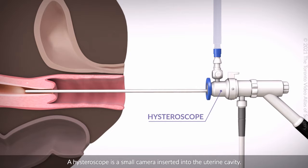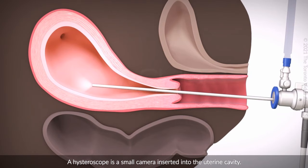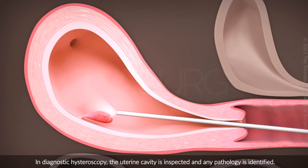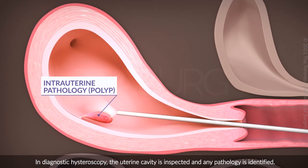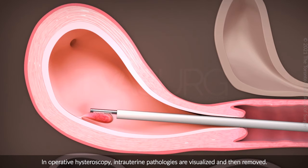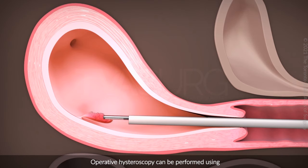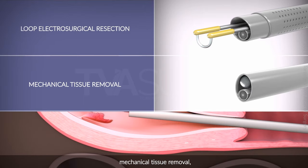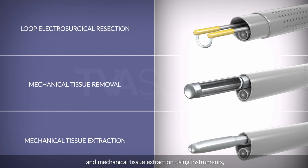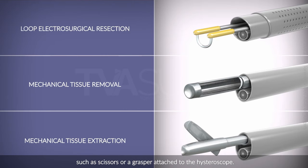A hysteroscope is a small camera inserted into the uterine cavity. In diagnostic hysteroscopy, the uterine cavity is inspected and any pathology is identified. In operative hysteroscopy, intrauterine pathologies are visualized and then removed. Operative hysteroscopy can be performed using loop electrosurgical resection, mechanical tissue removal, and mechanical tissue extraction using instruments such as scissors or a grasper attached to the hysteroscope.